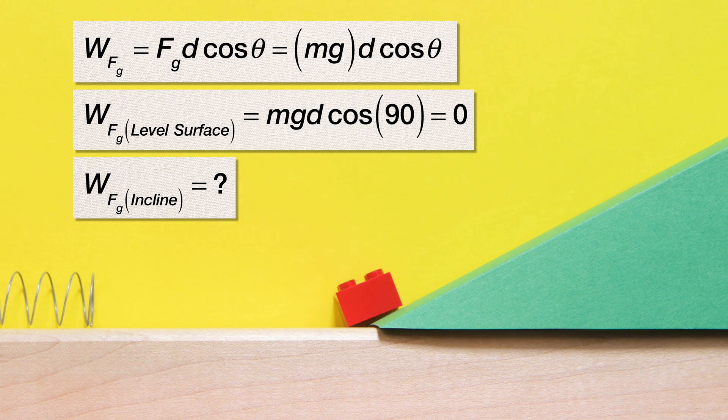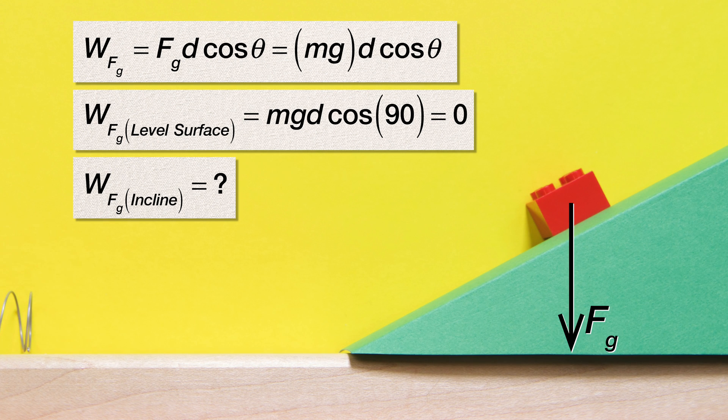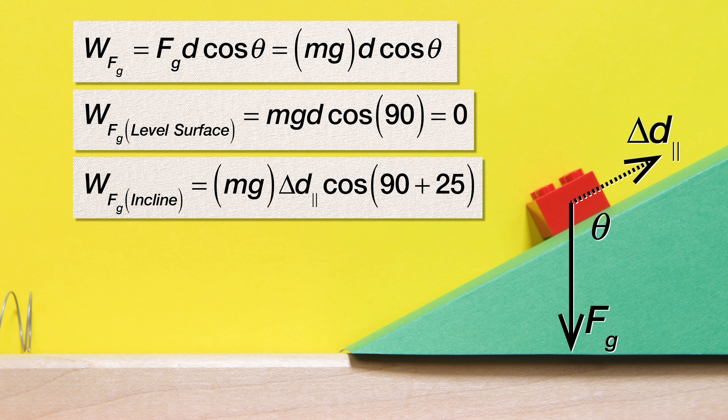On the incline, the force of gravity is still straight down. However, the direction of the displacement of the block is now up the incline. Therefore, the angle in the work due to the force of gravity equation on the incline is between straight down and up the incline, which works out to be 90 degrees plus the angle of the incline which is 25 degrees.